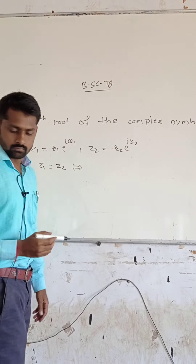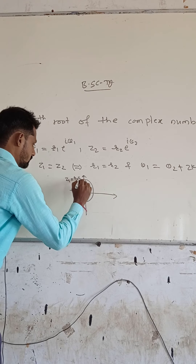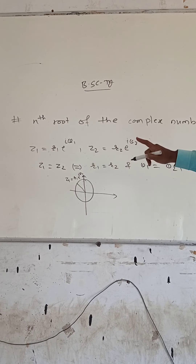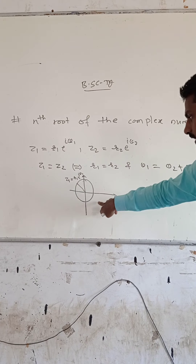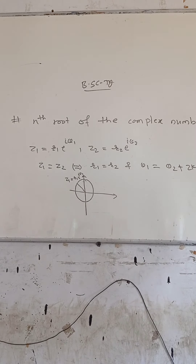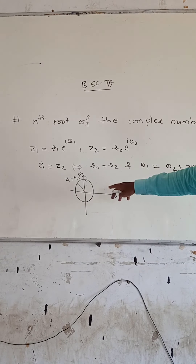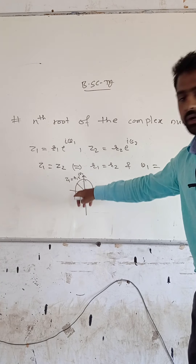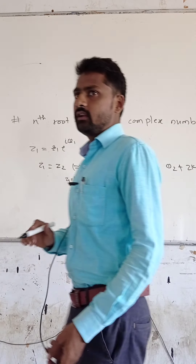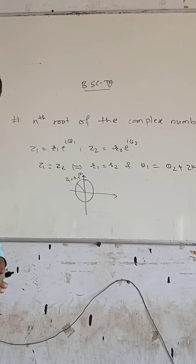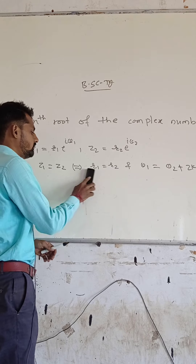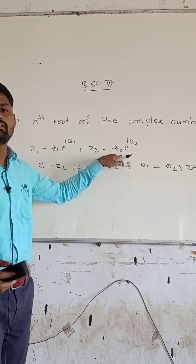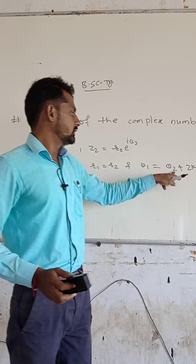Now consider Z1 is equal to R1 e raised to i theta 1. This complex number lies on the circle centered at origin whose radius is R1. If we increase theta from 0 to 2 pi, then the complex number moves around the circumference of the circle. And if we add 2k pi, there is no change in the complex number. So keep in mind that two complex numbers are equal if and only if their moduli are equal and theta 1 is equal to theta 2 plus 2k pi.